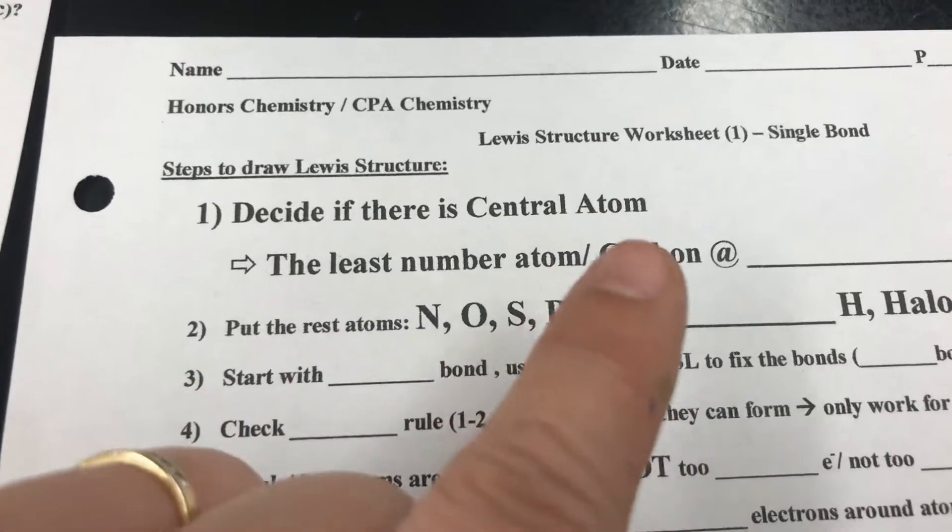Check HONC rule: H only one bond, and oxygen can form 2 bonds — the rule is fine. Full shell check: hydrogen is already full because hydrogen only needs 2 electrons, and one bond gives 2. But oxygen needs 8 and currently has only 1, 2, 3, 4 electrons — not full shell. We have 4 leftover electrons, so we put 2 on top and 2 on bottom of the oxygen.